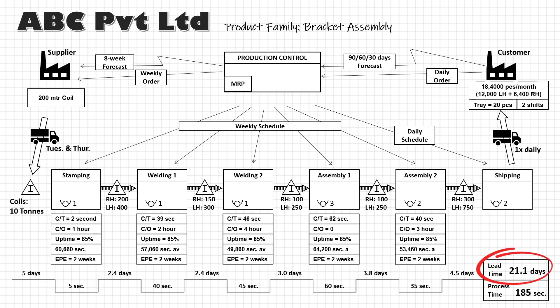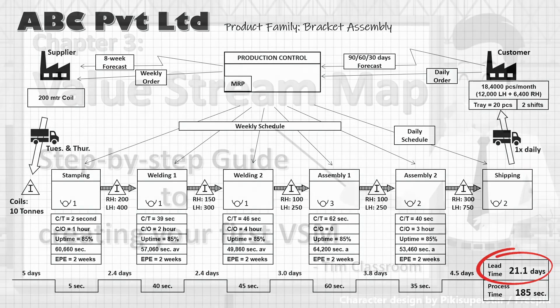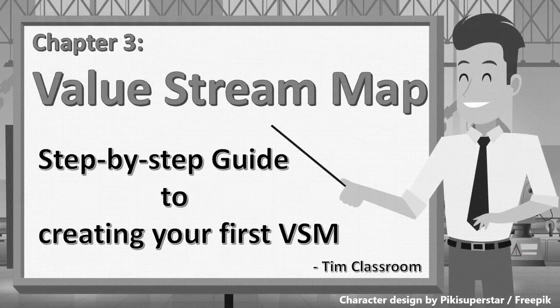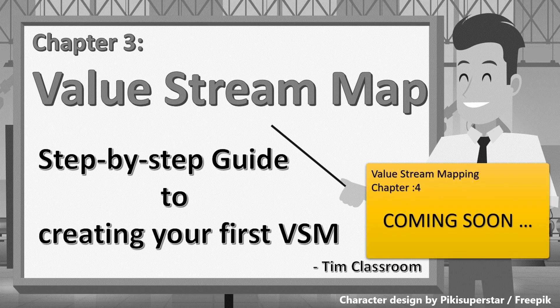This is your current state. And the best part is, now you understand why improving cycle time hardly helps in improving the lead time of the product. Making this VSM is only the first step — the actual work begins now. In the coming lessons, we will go through a few lean practices and understand how we can improve our lead time and move to a better future state. See you there!